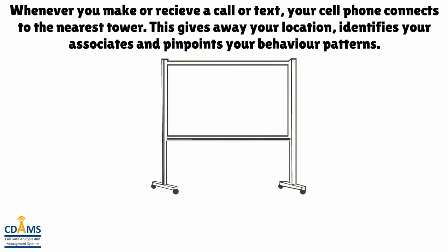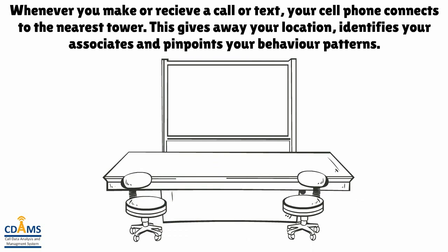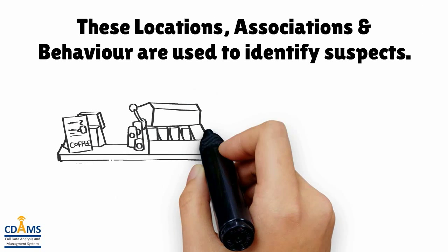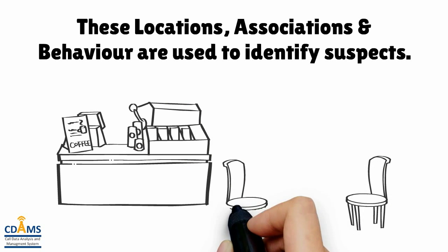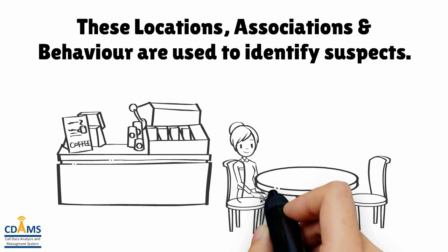Whenever you make or receive a call or text, your cell phone connects to the nearest tower. This gives away your location, identifies your associates, and identifies behavior patterns. These locations, associations, and behavior are used to identify suspects.